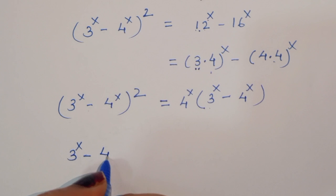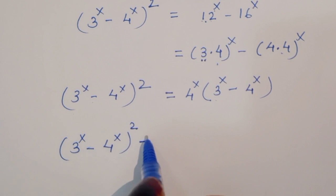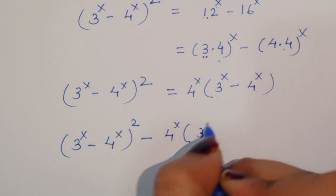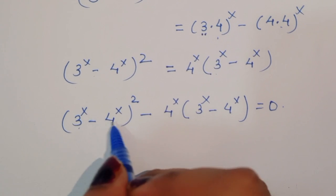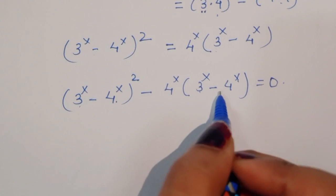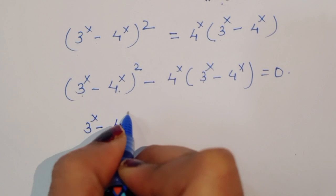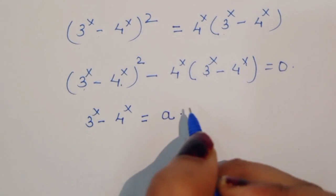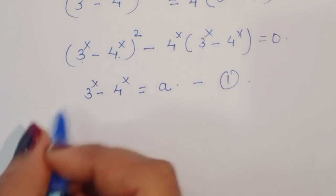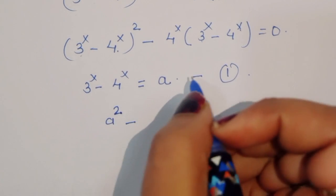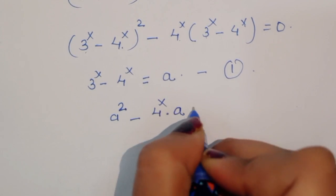So we have (3^x minus 4^x)^2 is equal to 4^x times (3^x minus 4^x). Notice that (3^x minus 4^x) is common on both sides. Let's substitute A equal to (3^x minus 4^x) — call this equation 1. We can then write A^2 minus 4^x times A is equal to 0.